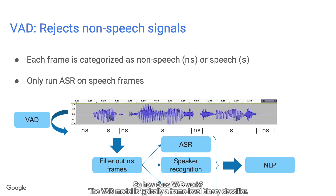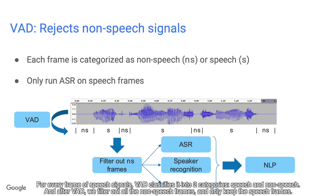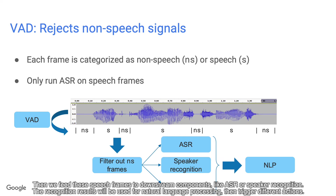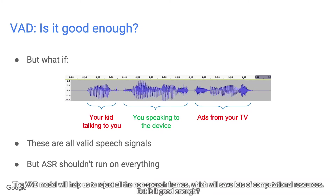How does VAD work? The VAD model is typically a frame-level binary classifier. For every frame of speech signals, VAD classifies it into two categories: speech and non-speech. After VAD, we filter out all the non-speech frames and only keep the speech frames. We then feed these speech frames to downstream components like ASR or speaker recognition, whose results are used for natural language processing to trigger different actions. The VAD model helps us reject all non-speech frames, saving lots of computational resources.